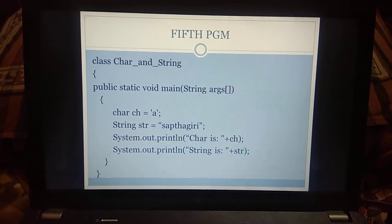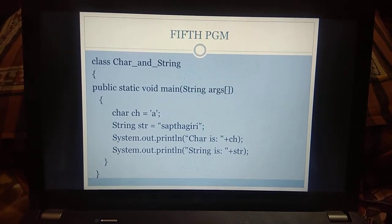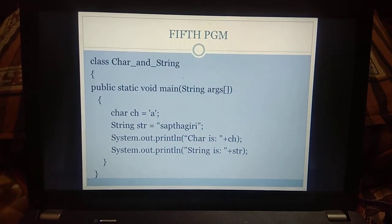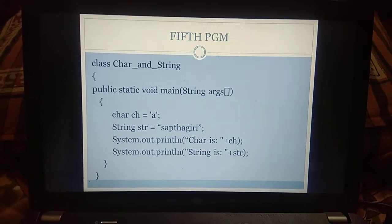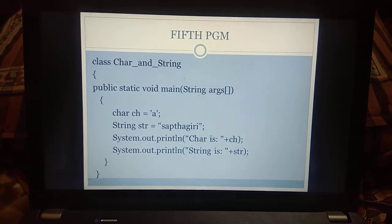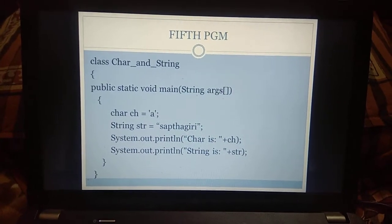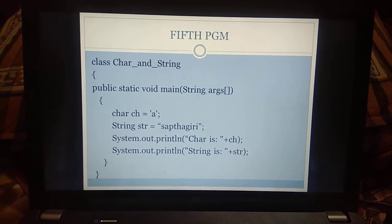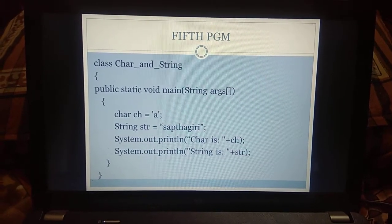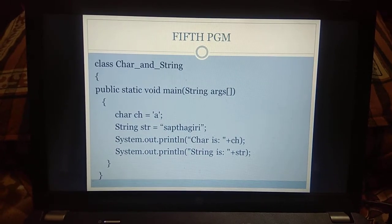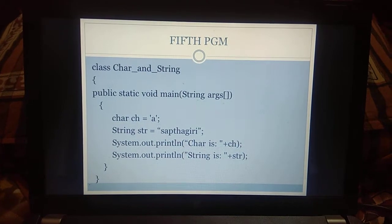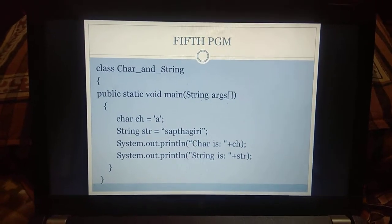In the fifth program, you understand that we are declaring a character variable and a string variable. String data type should be written as 'String' with a capital S. String is a generic class and we can create objects for String. These are the basic understandings from this program.